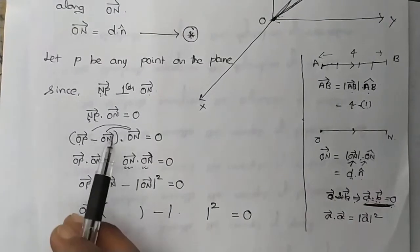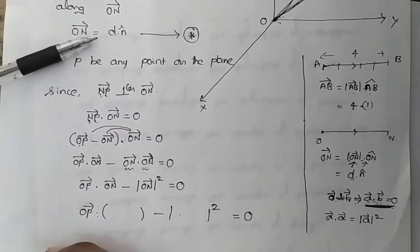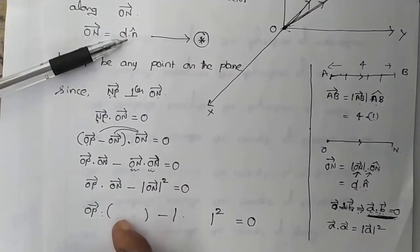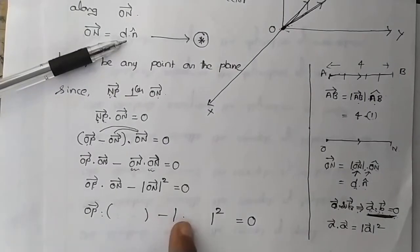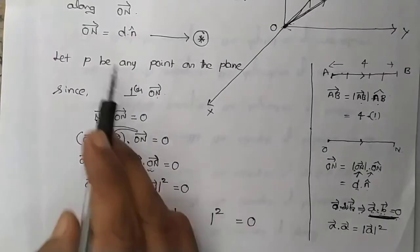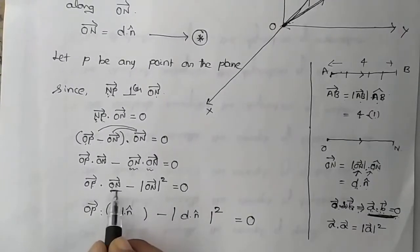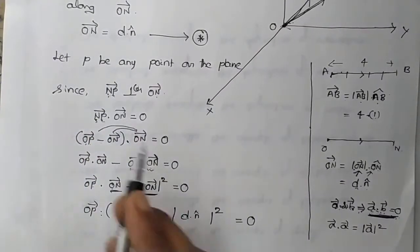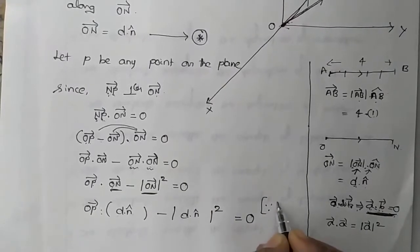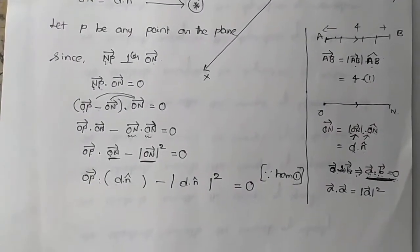From equation star, ON vector = D · N cap. Substituting ON vector with D·N cap in both places: OP vector · (D·N cap) − |D·N cap|² = 0. We can split the magnitude: |D|² · |N cap|² = D² · |N cap|². Since D is a distance it is always positive, so |D|² = D².